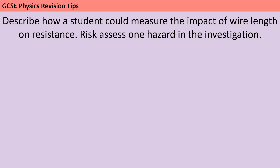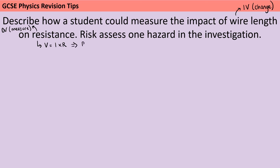So in this investigation, we're changing the length of the wire — that's our independent variable — and then we're measuring the resistance. Now, you can't measure resistance directly, so instead you're going to need to use a voltmeter and an ammeter to measure potential difference and current, and then use that V = IR equation, rearranged to: resistance = potential difference divided by current.